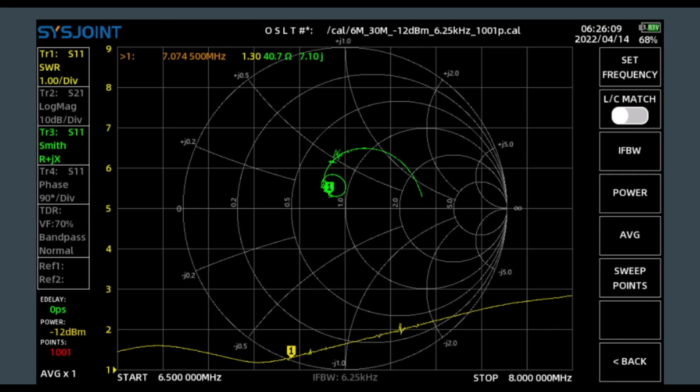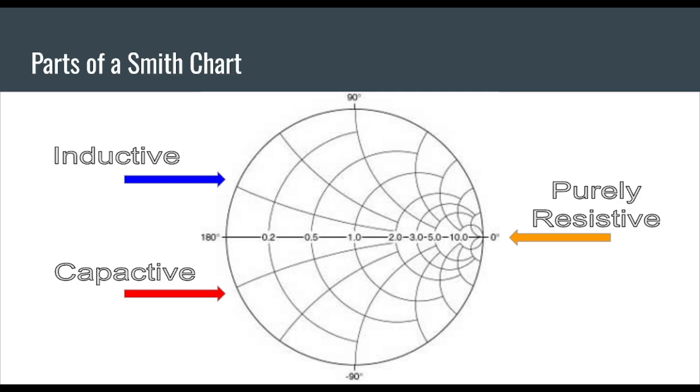In green you can see our plot on the Smith Chart and what we have here is 40.7 ohms of resistance and 7.1 ohms of inductive reactance. It's inductive reactance because we're north of this equator that runs through the center but we're going to talk more about the parts of the Smith Chart.